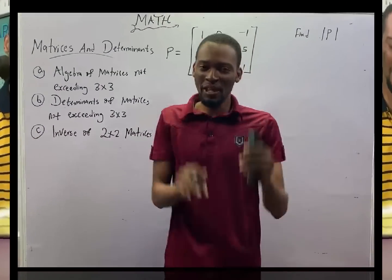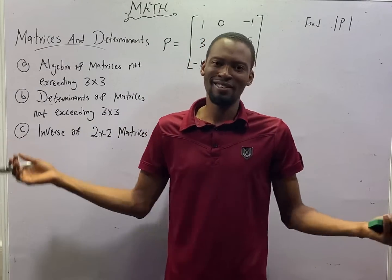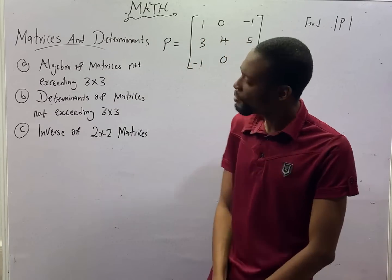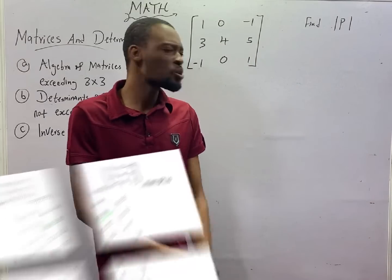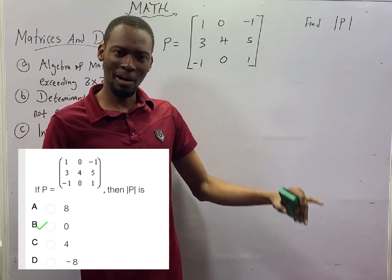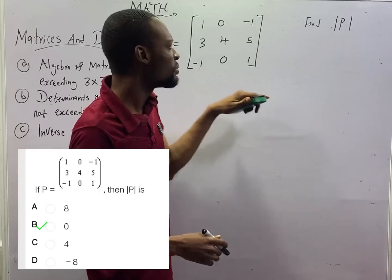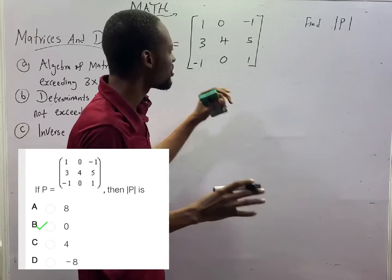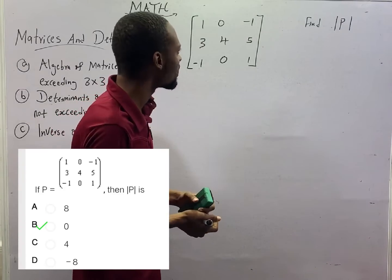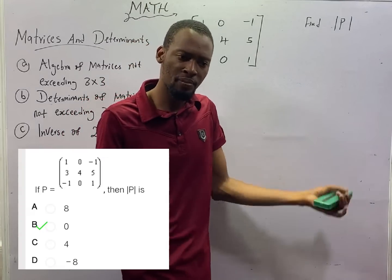This is episode number 56 of the '120 Days to Jam Mathematics with Flash Isaac,' and this episode brings an end to matrices and determinants. We shall be looking at 3×3 matrices in this class, especially the determinants of 3×3 matrices.